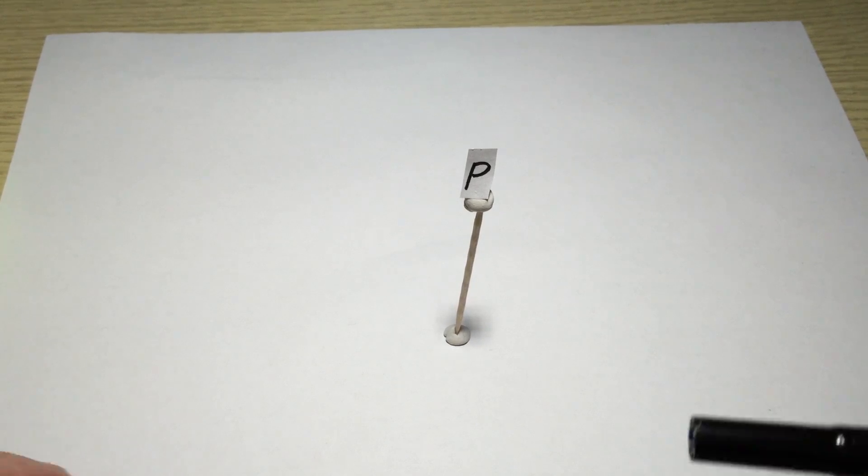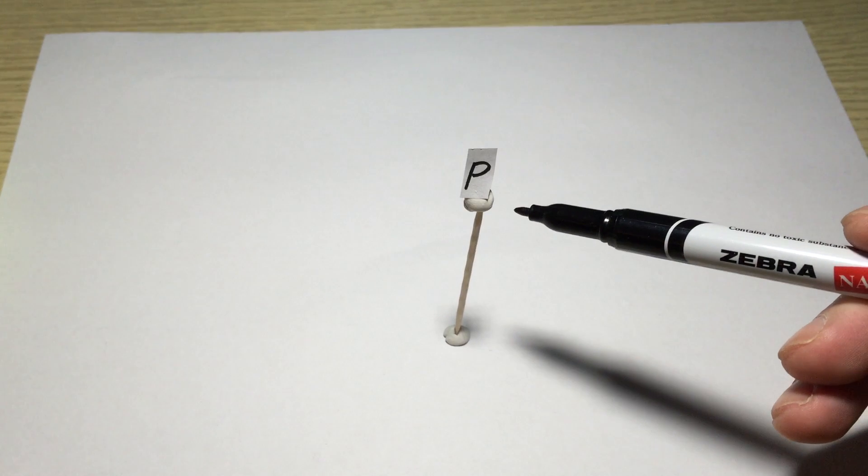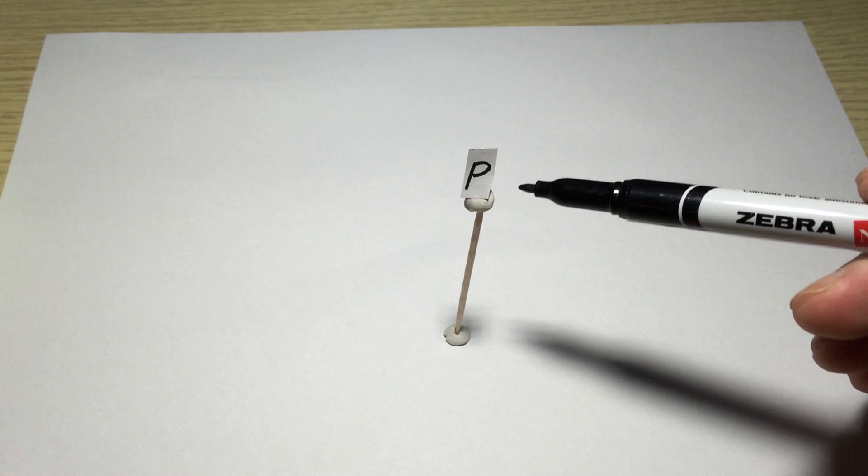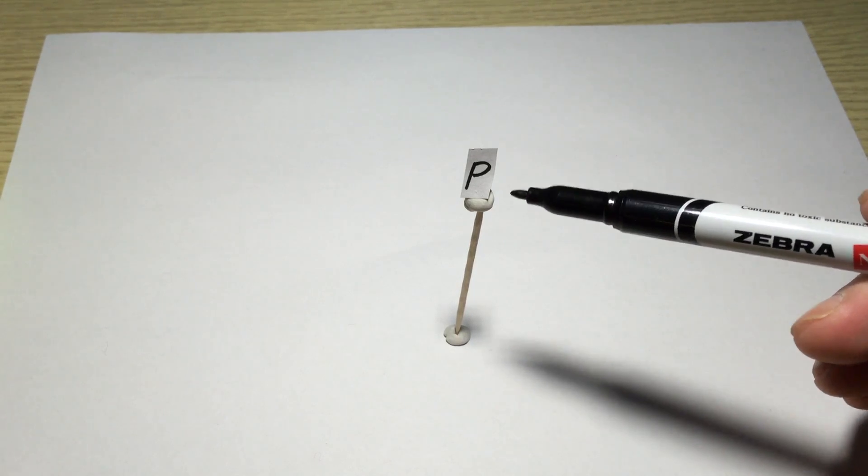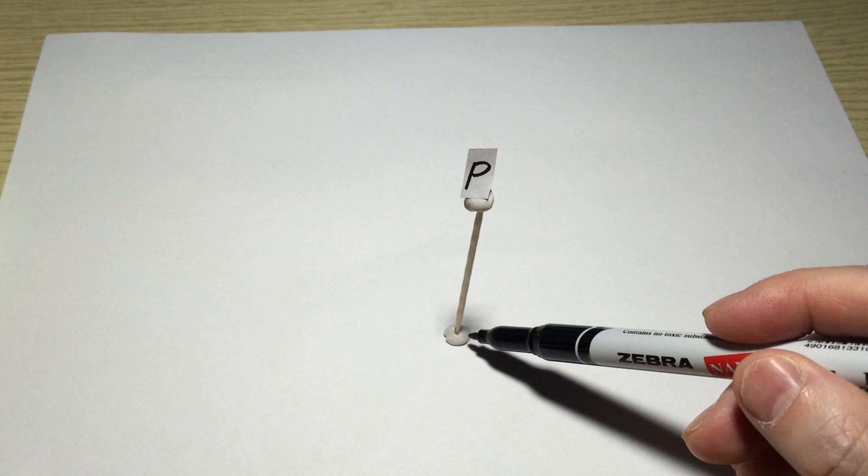Now let's look at a very simple model. So this is point P and we have a light shining from the top to the bottom. So the light source will produce a shadow. Let's assume this is the shadow.